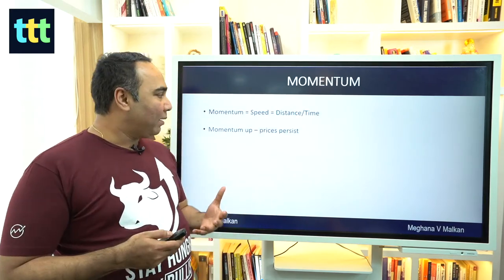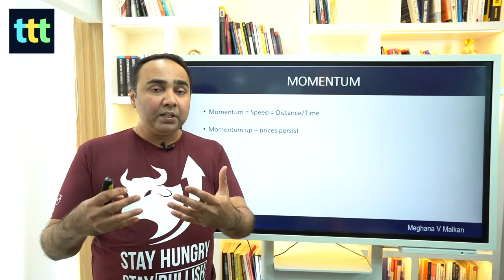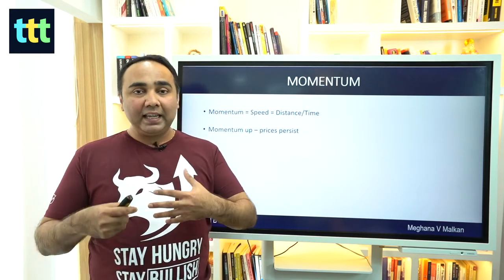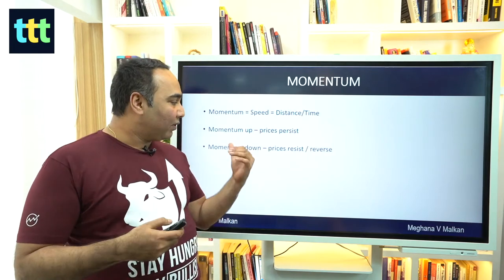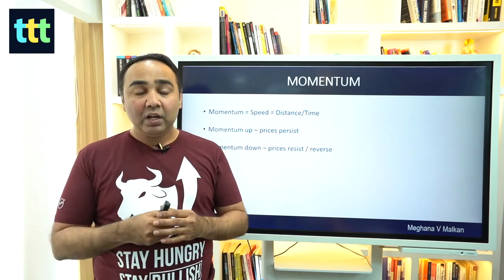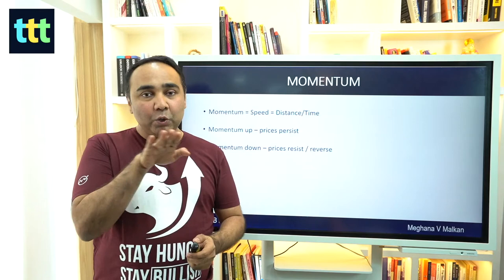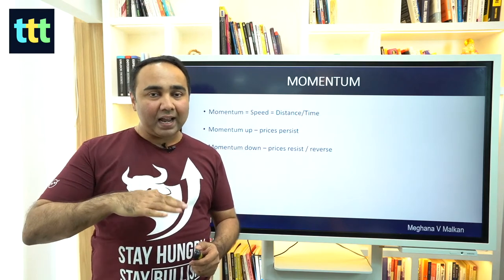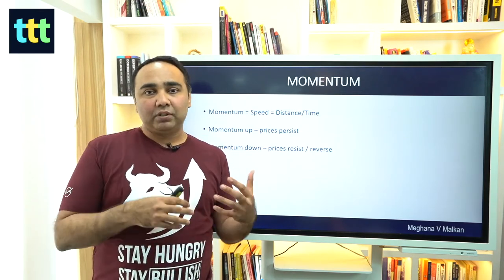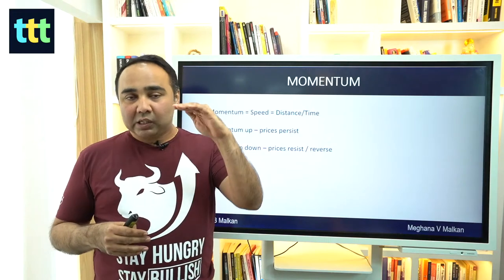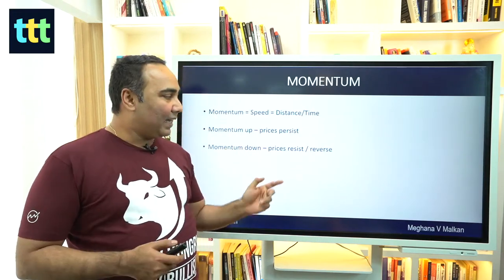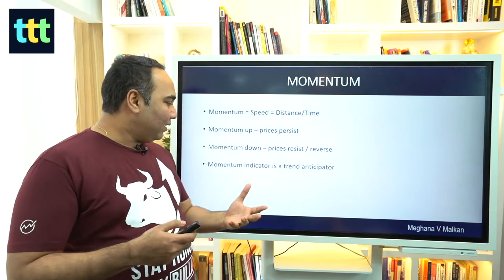When the momentum indicator is up, the markets persist — they keep going up, like they keep going fast. When the momentum resists or momentum is down, the speed comes down. Like when you want to take a U-turn, first you slow down your car and then take the U-turn. In the same way, when the market has to turn, it will slow down the momentum — slow down the speed — and then take a reversal.